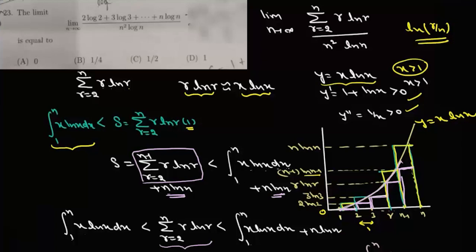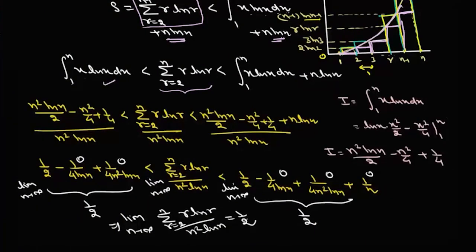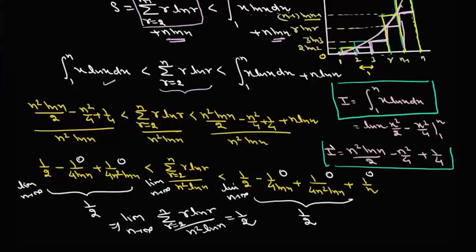Now we solve the integral of x·logx dx from 1 to n using integration by parts: taking logx and x, we get [logx · (x²/2) − (x²/4)] from 1 to n. Substituting the limits gives: (n²·logn)/2 − n²/4 + 1/4. So the summation r·logr lies between (n²·logn)/2 − n²/4 + 1/4 and (n²·logn)/2 − n²/4 + 1/4 + n·logn.